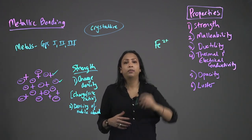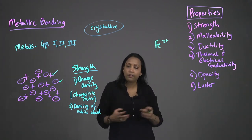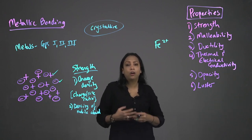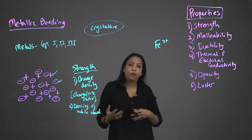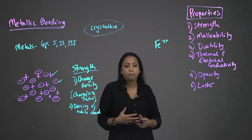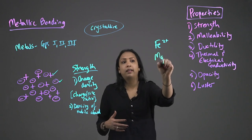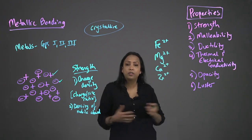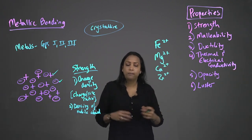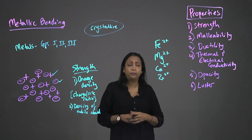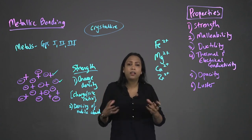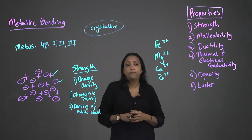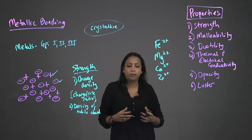Fe2+, for example, iron is very important in the formation of hemoglobin, which is the pigment in our red blood cells responsible for transporting oxygen around our body. We have other ions like magnesium, calcium, zinc, and a host of other ions that are very important for the maintenance of electrolyte balance in our bodies as well as the functioning of enzymes.